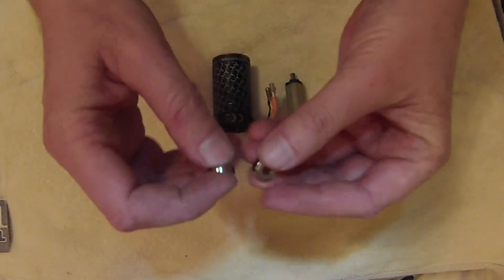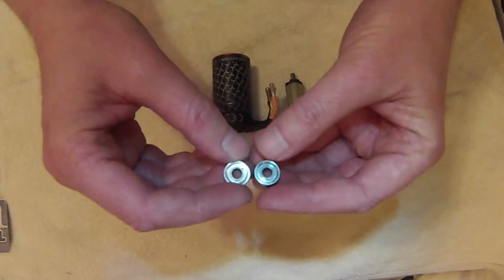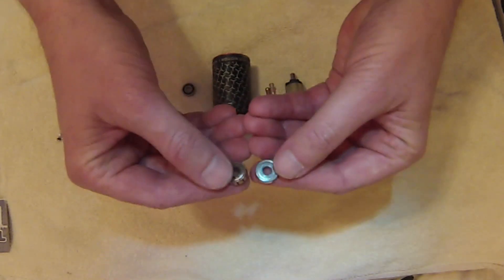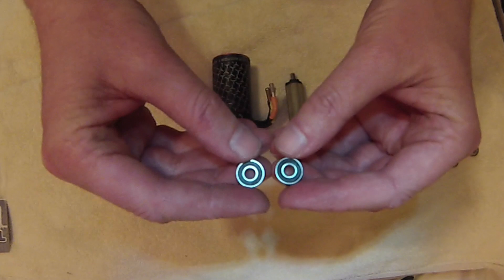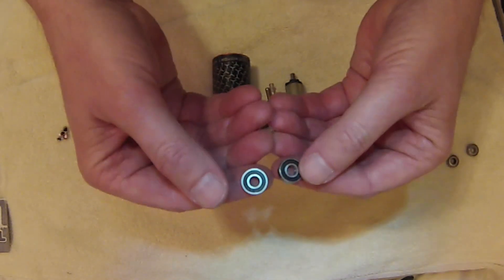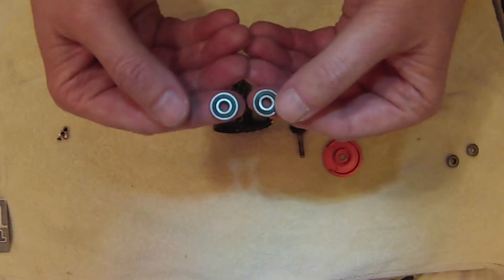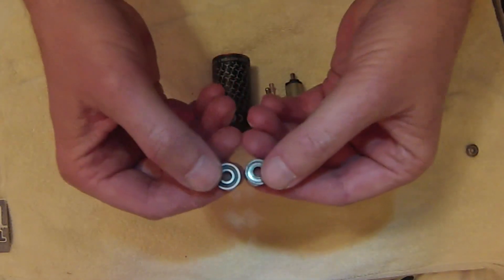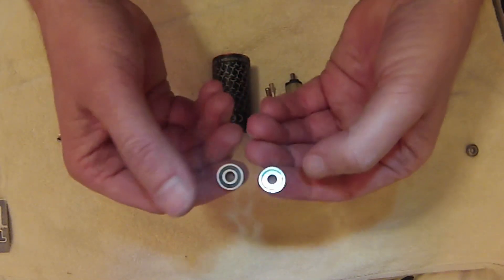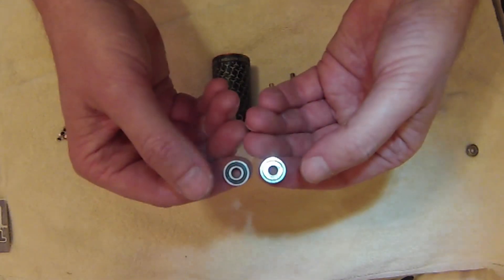These are the original bearings, as you can see, non-sealed. I am replacing them with these sealed bearings. Hopefully you can see the difference, sealed versus non-sealed. It's got a rubber seal on it to protect it from dust, dirt, debris, etc.